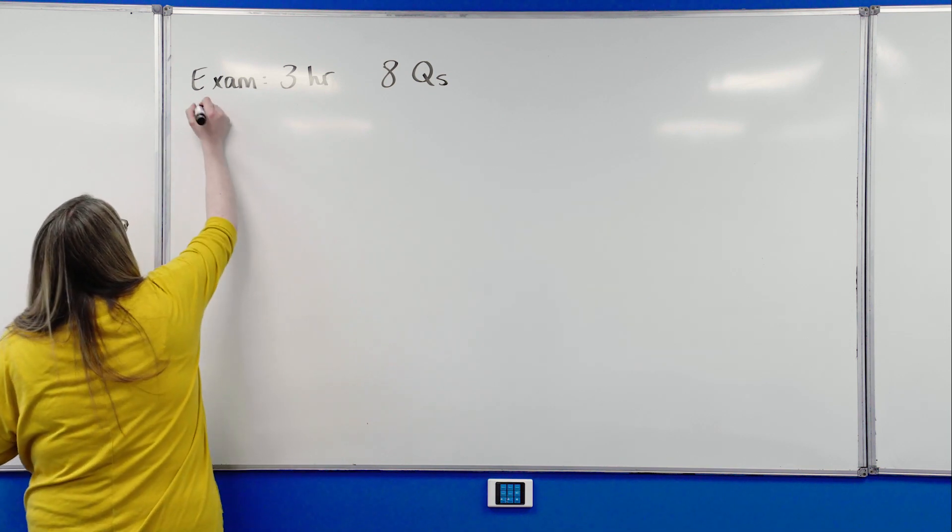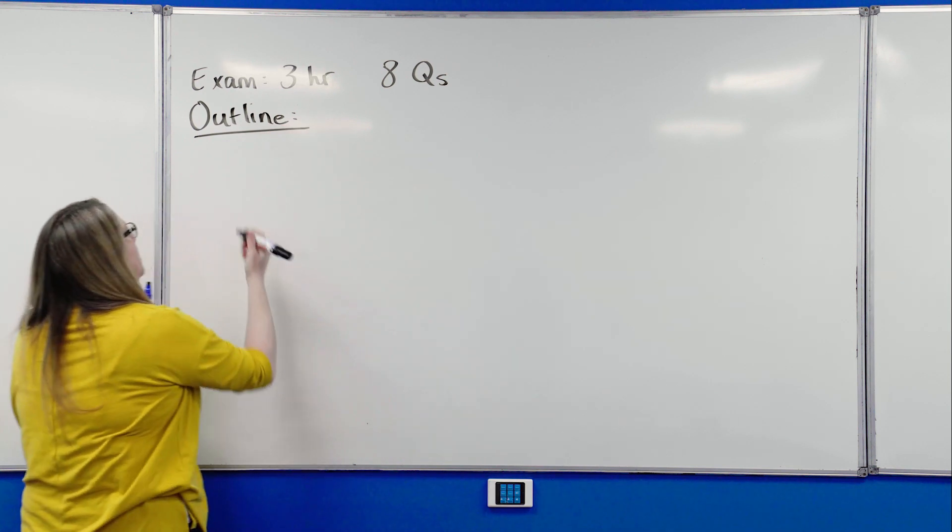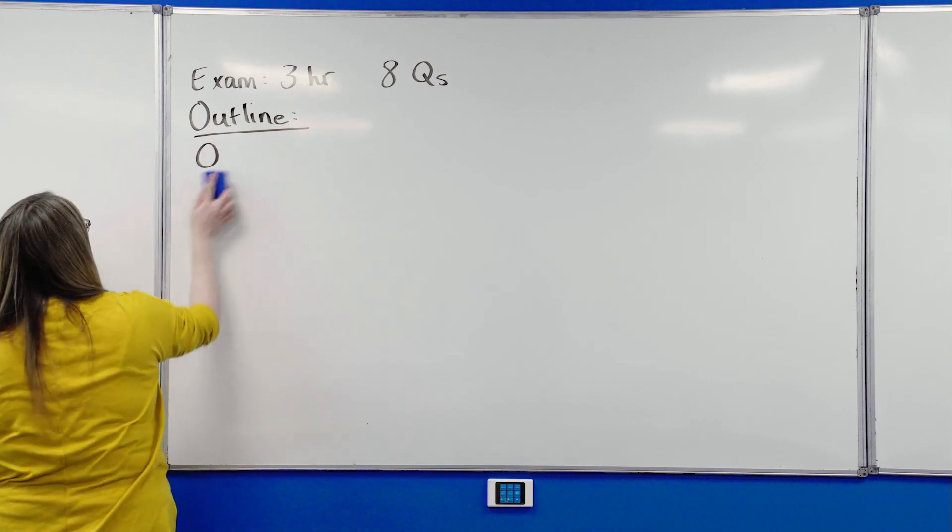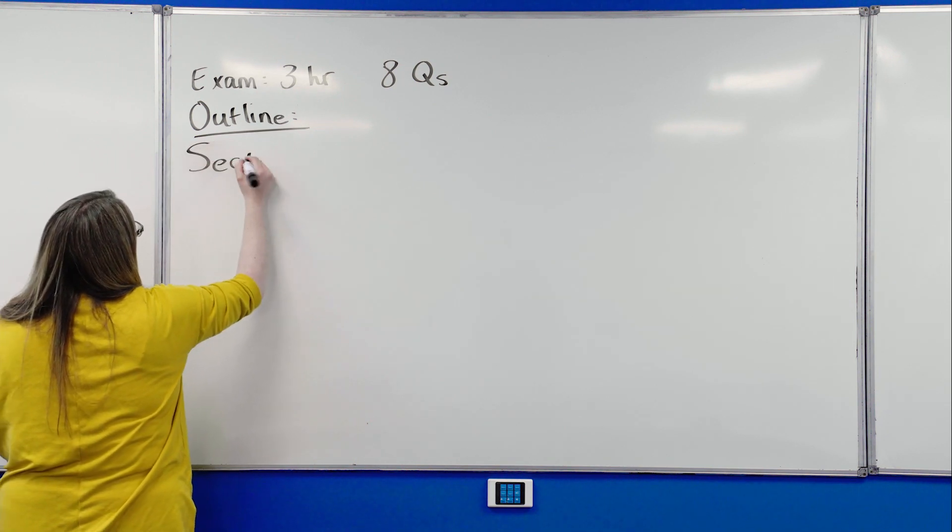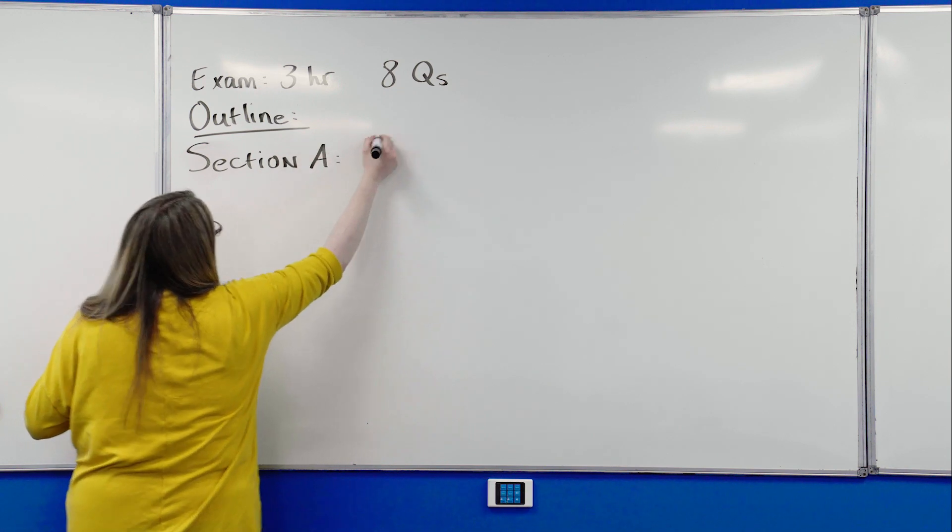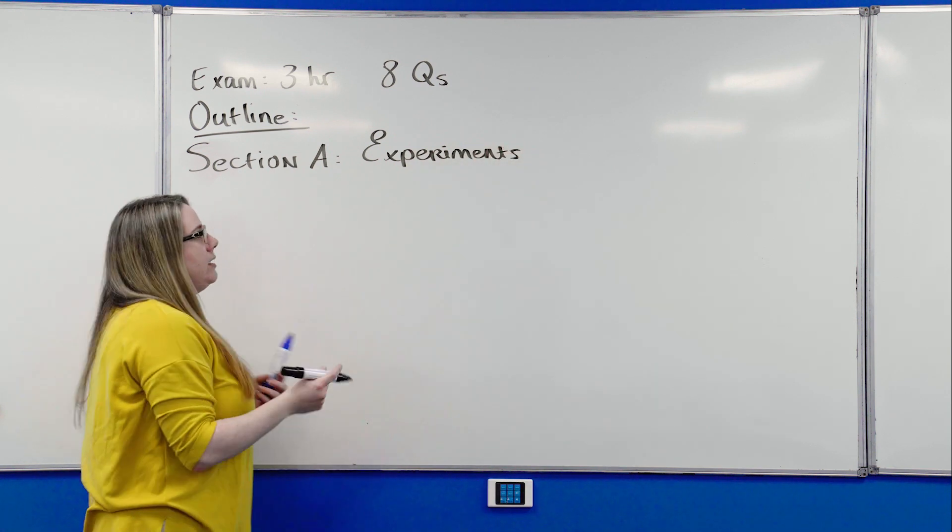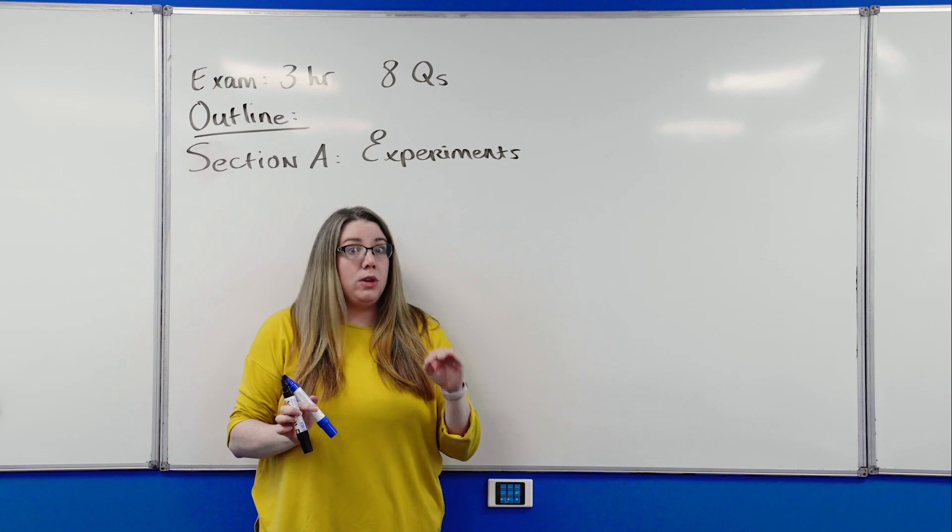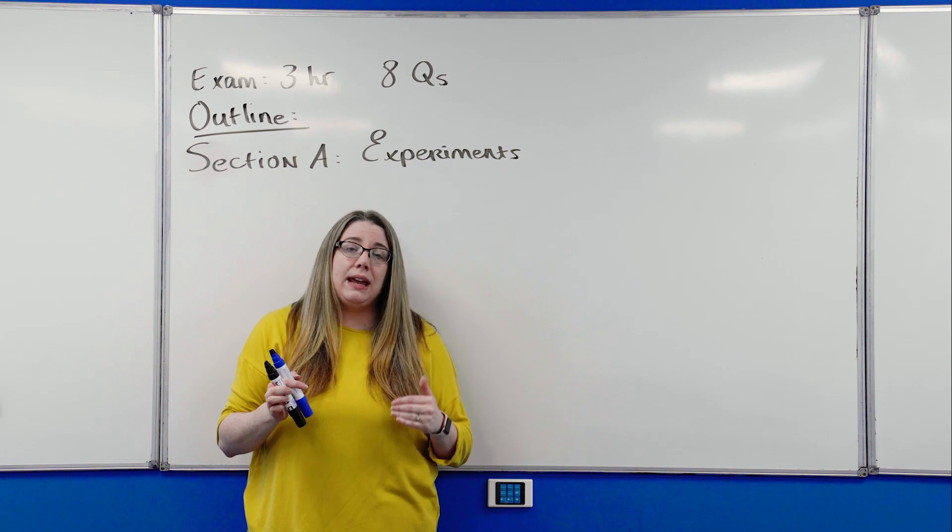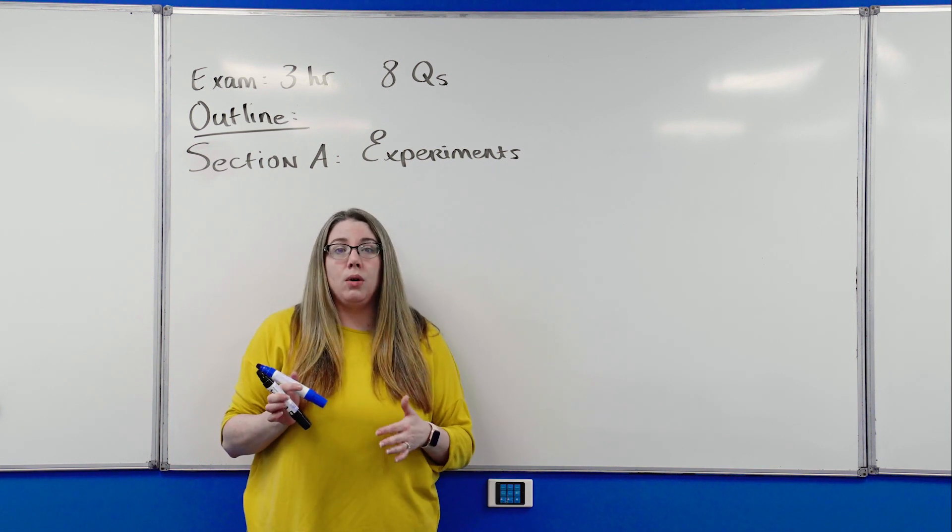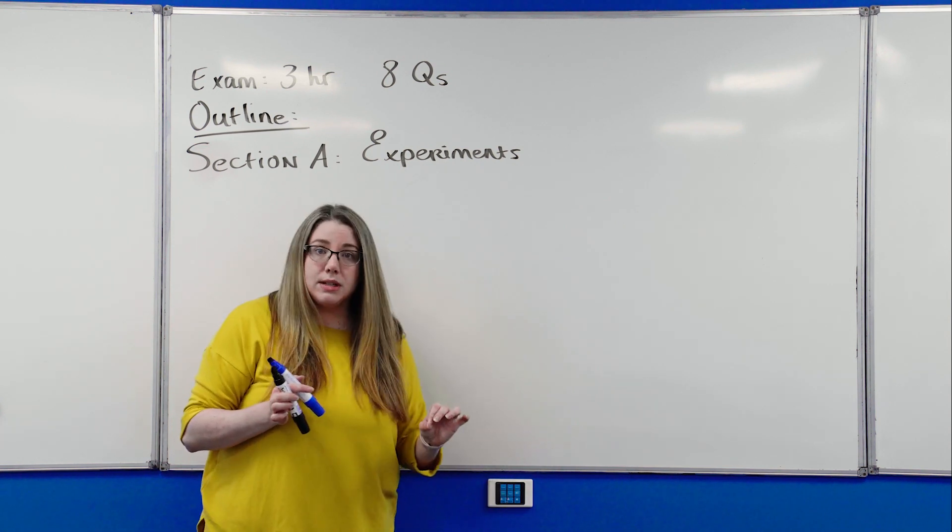So the actual outline of the exam. The exam is split into two sections. Section A is the experiments. Now for anyone who's like, oh I don't really like the experiments, can I skip them? No, you absolutely can't skip the experiments because they're not just going to come up in section A, they also come up in section B, which we're seeing more and more often in the more recent exam papers. You will always get an experiment question in section B as well. So don't skip them.